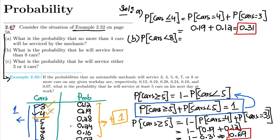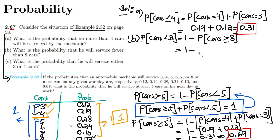Fewer than 8 covers all of them, so I would need to add the probabilities for 3, 4, 5, 6, and 7 together, which would be tedious. Instead, I can use the complement: since this is less than 8, I can subtract the probability of cars greater than or equal to 8. I already know that probability is 0.07, so the result is 1 minus 0.07, which equals 0.93. That is the probability that the number of serviced cars will be fewer than 8.